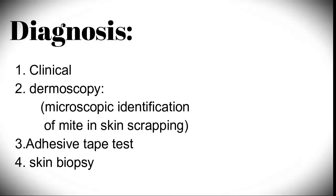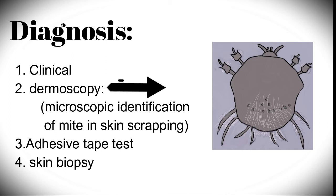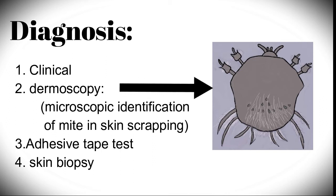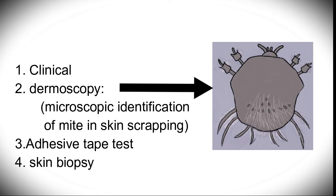To diagnose scabies we have four different options. First is a clinical option, which is one of the most common and is enough most of the time. Second is dermoscopy, in which we do microscopic identification of the organism from skin scrapings. Third is the adhesive tape test, which is similar to dermoscopy — we apply the tape and then observe it under the microscope. Fourth, for very difficult cases, we go for skin biopsy.